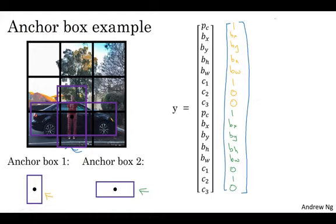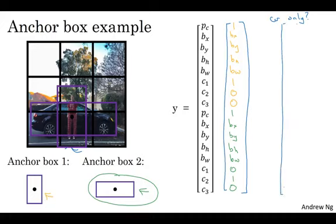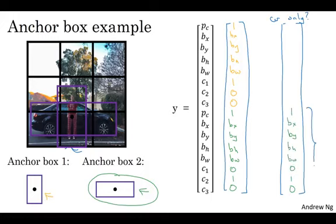Now, what if this grid cell only had a car and had no pedestrian? If it only had a car, then assuming that the shape of the bounding box around the car is still more similar to anchor box two, then the target label Y, if there was just a car there and the pedestrian had gone away, it would still be the same for the anchor box two component, right? Remember that this is the part of the vector corresponding to anchor box two. And for the part of the vector corresponding to anchor box one, what you do is you just say there is no object there, so PC is zero, and then the rest of these will be don't cares.